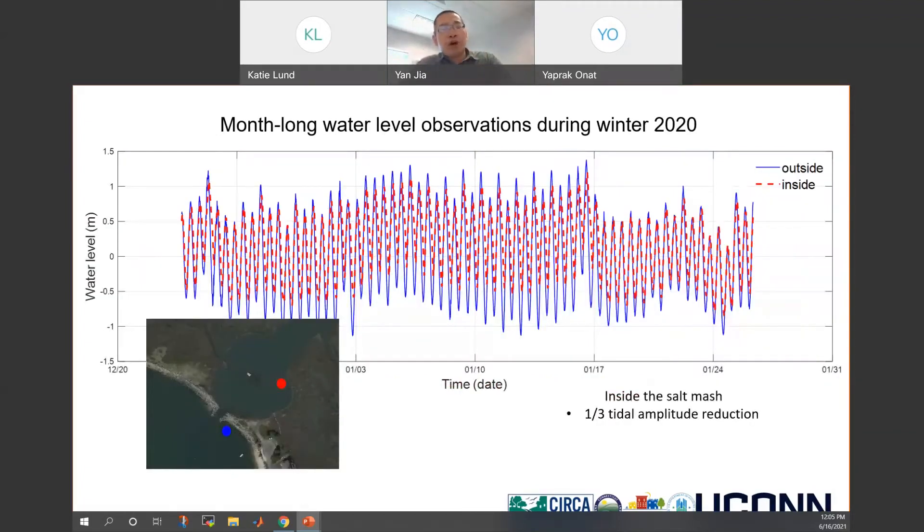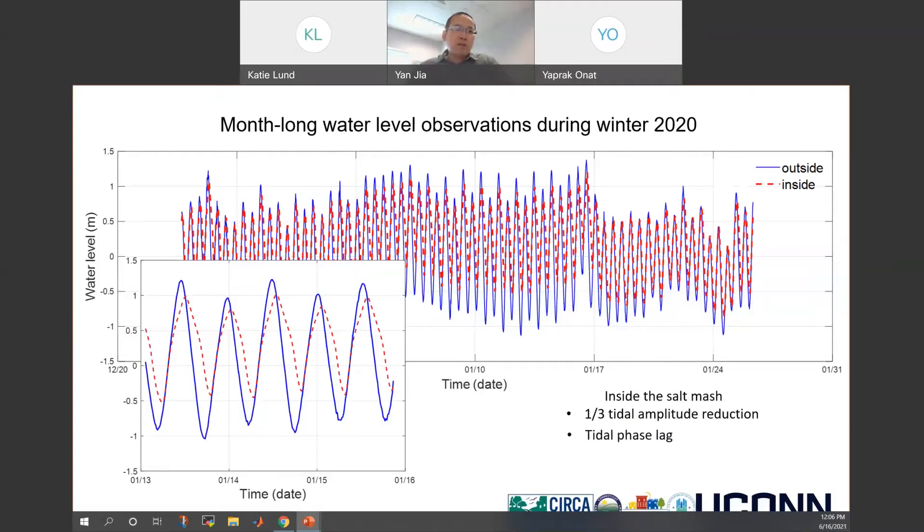We first show some observation results. On the lower panel, you can see a satellite image marking the field instrument locations. The blue is outside, the red is inside water level sensors. So we have a relatively one month long measurement of the water levels during last winter. You can tell the tidal amplitude inside of the salt marsh is about a third smaller than the water level variations outside. If you zoom in, you can tell besides the tidal amplitude reduction, the high tides inside the salt marsh are always about one hour behind the high tides in the outside open water.